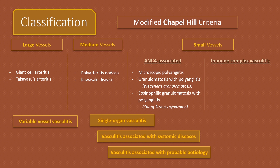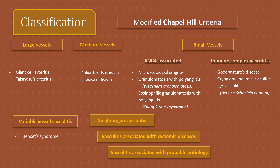40–60% of patients with Eosinophilic Granulomatosis with Polyangiitis are ANCA positive. Immune complex vasculitis include Goodpasture's disease, also known as Anti-Glomerular Basement Membrane Antibody disease, cryoglobulinemic vasculitis, and IgA vasculitis also known as Henoch-Schönlein Purpura. Included in variable vessel vasculitis are Behcet's and Cogan's syndrome.